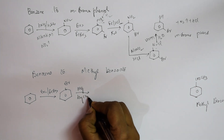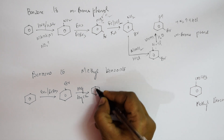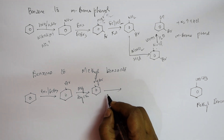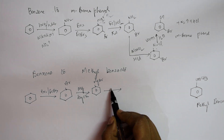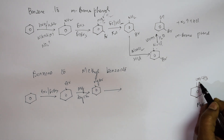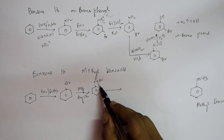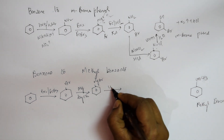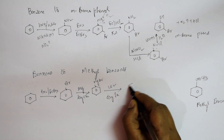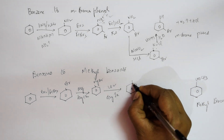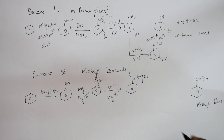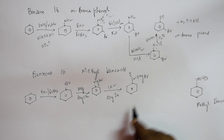From the Grignard's reaction, I get phenyl magnesium bromide (PhMgBr). To this Grignard's reagent, I add CO2 using dry ice. This gives the intermediate C(=O)OMgBr, gradually introducing the carboxyl group.